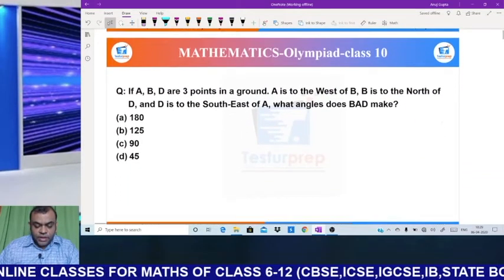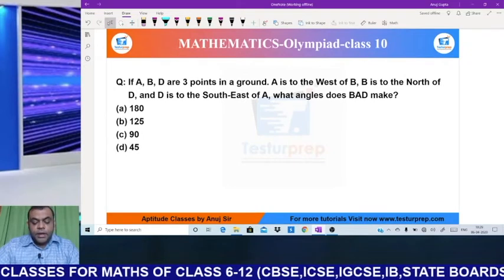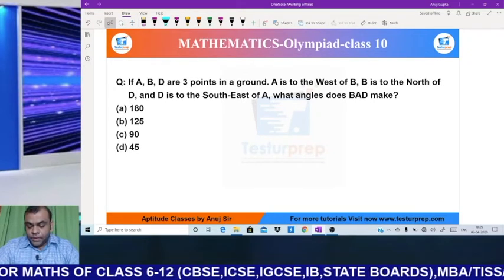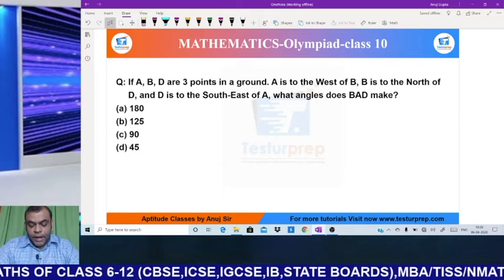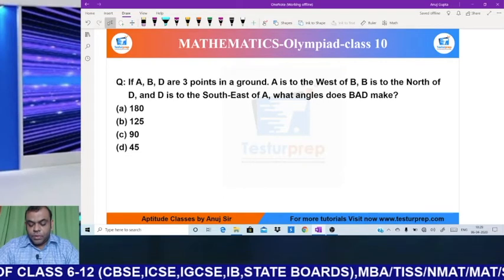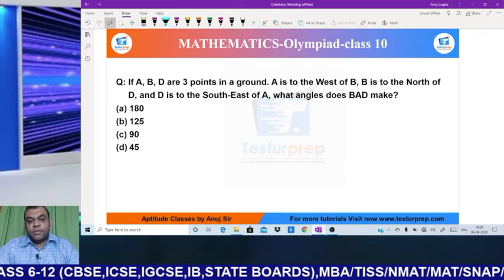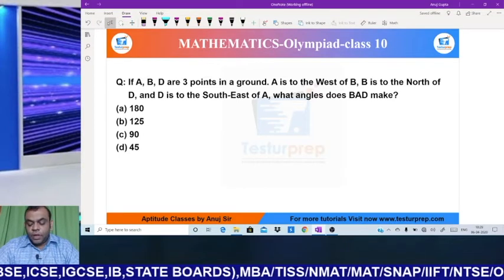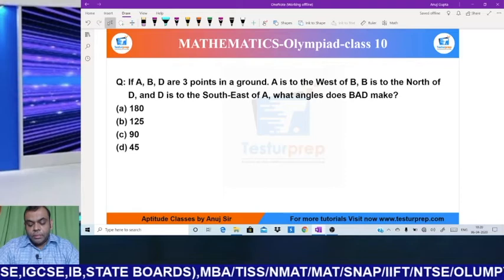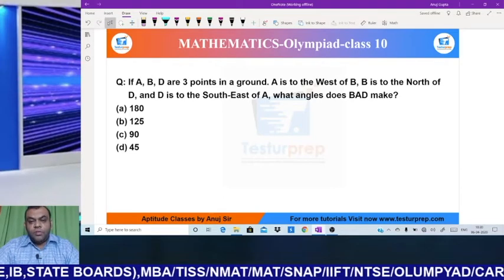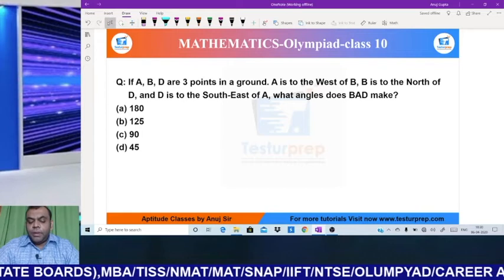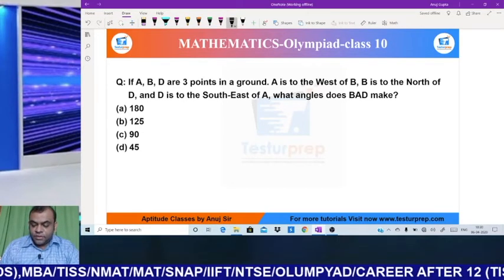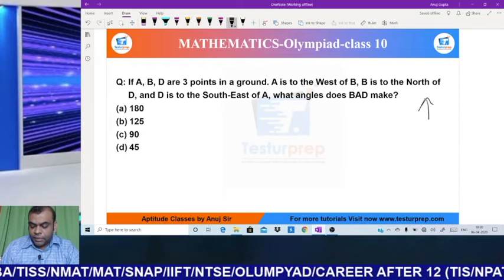My first question says that A, B, D are 3 points on ground. A is west of B, B is north of D, and D is southeast of A. What angle does B, A, D make? To draw this question, we need basic knowledge of directions. So I am making a directional graph in front of you.